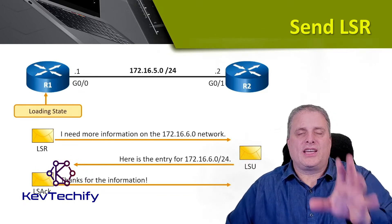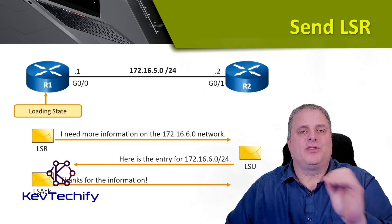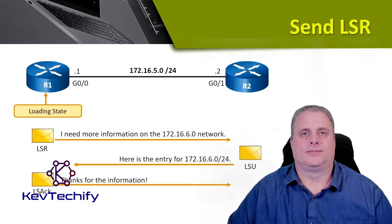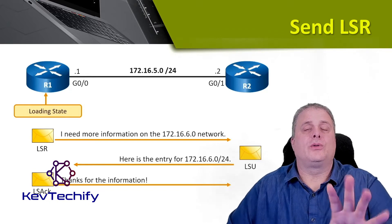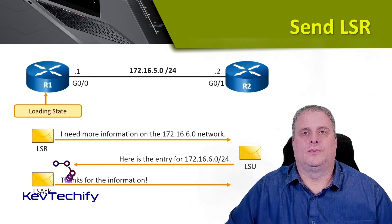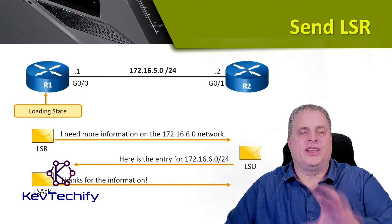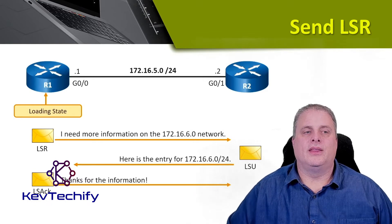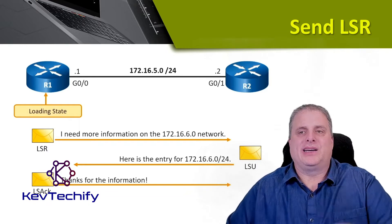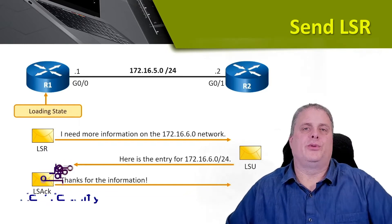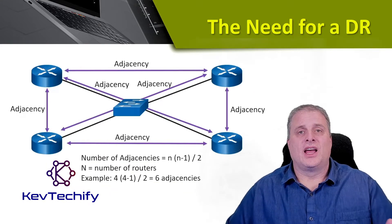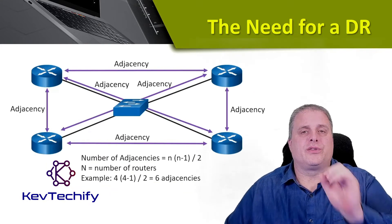In the LSR, we're going to ask for more specific information on different entries in our DBD. The other router that receives that request will respond accordingly with an LSU, which is a link state update. Then the originating router will respond with a link state acknowledgement, because OSPF likes to be reliable. After all of these LSRs and LSUs, we have reached full convergence.